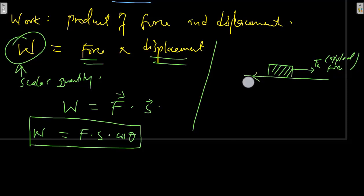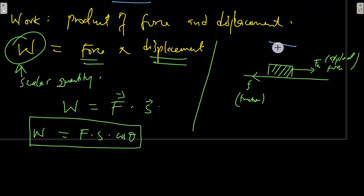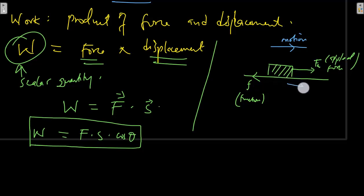Then friction is acting in the opposite direction. Now, let's say the applied force is greater than friction, so our body is moving in the direction of the applied force — this is the direction of motion. As we continue to apply our force, this object is going to be displaced in that direction, so the displacement is heading in the direction of motion.